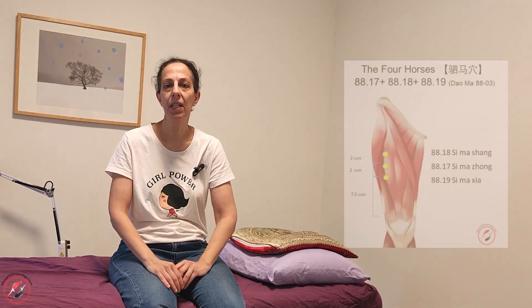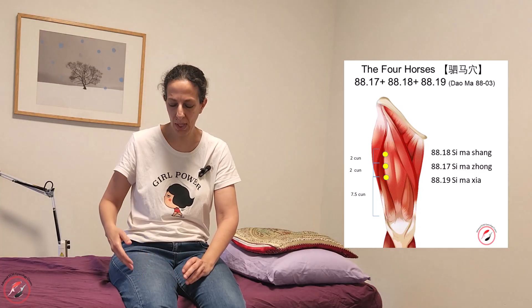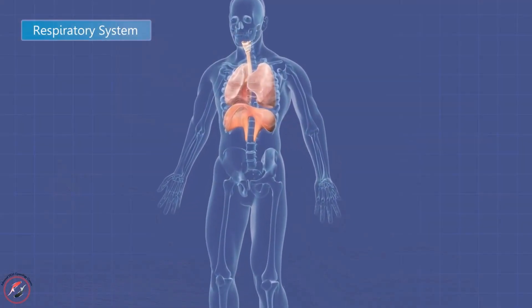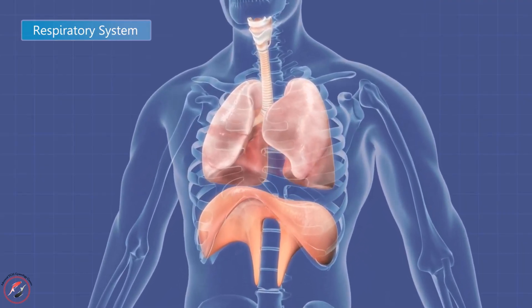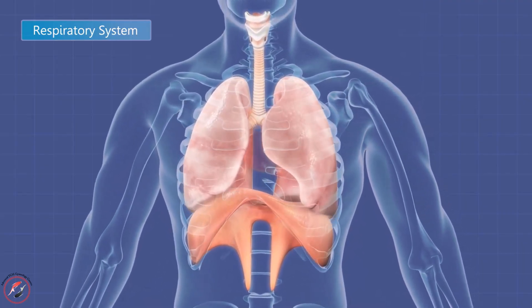Another example is the Suma acupuncture points. The Suma points are on the thigh and are considered to treat lung disorders. Their Shen Jing, or the nerve that Mastodong relates them to, is the lung organ. So these points will treat lung diseases — any kind of lung disease or immunity issues — and we can think of Suma acupuncture points for those conditions.